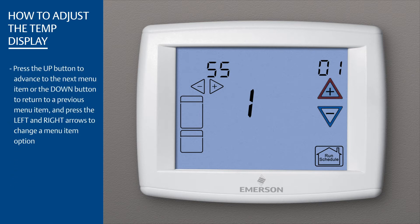Press the up button to advance to the next menu item, or the down button to return to a previous menu item. Press the left or right arrows to change a menu item option.